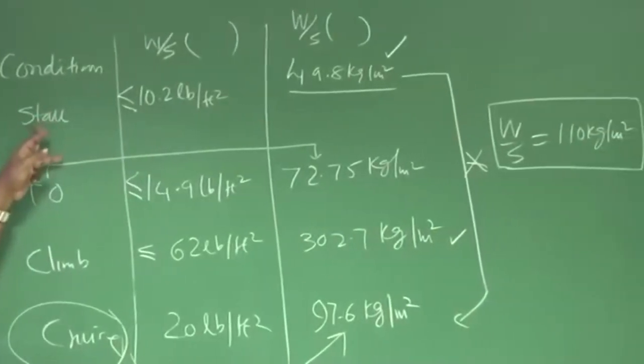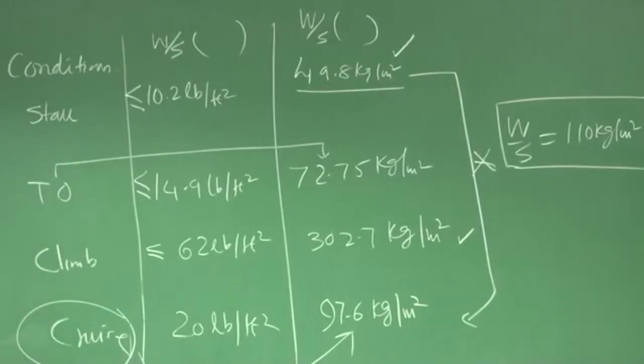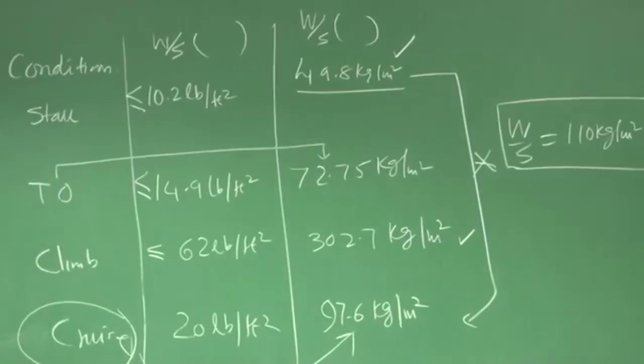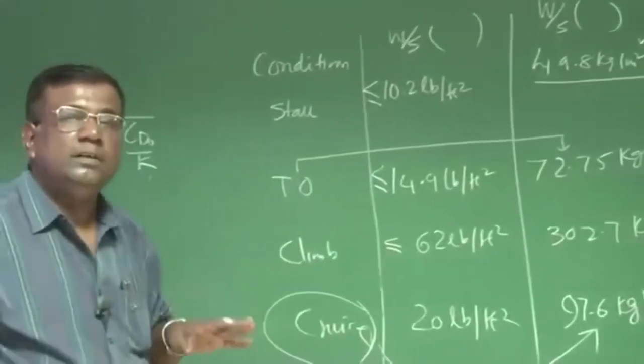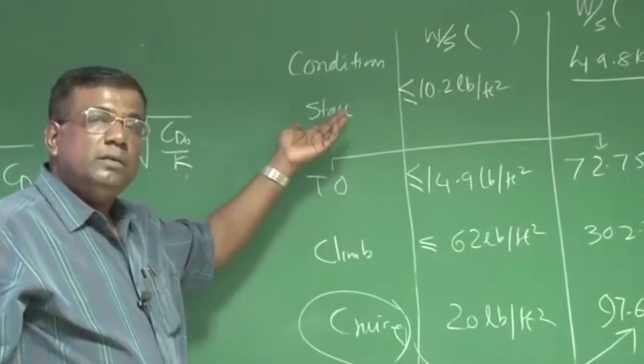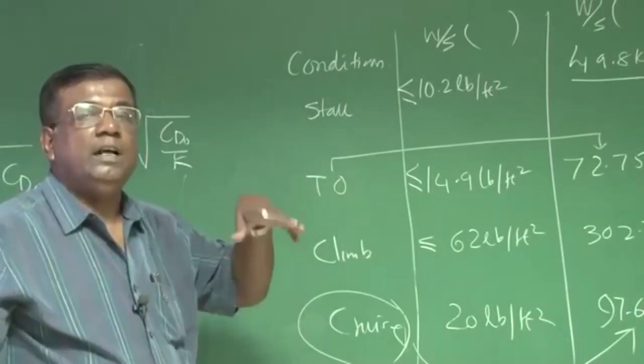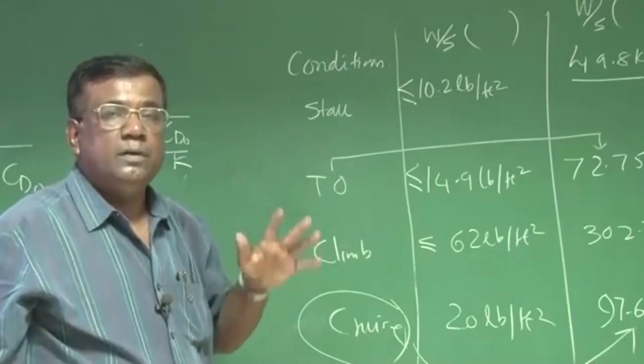And then the question is if the lowest wing loading criteria I am selecting, I will cross check what is the mission performance it is satisfying. It is stall. My airplane, if the requirement is very stringent on takeoff condition, then I may give wing loading as a primary importance, as long as I am exhausted with all the CL max or high lift device options.